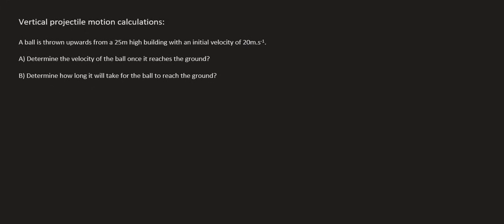So, here I've changed the question slightly and now it becomes a lot more interesting. Now, we say that the ball is thrown upwards from a 25 meter high building with an initial velocity of 20. But that's thrown upwards. It says determine the velocity of the ball once it reaches the ground.